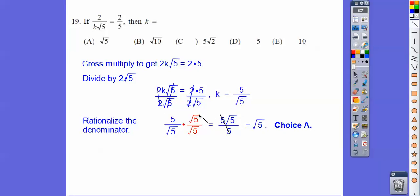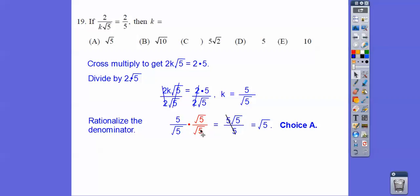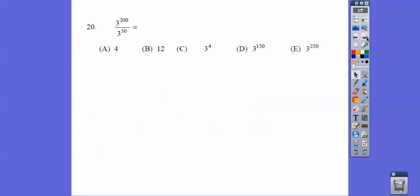So we get rid of the root 5 in the denominator by multiplying by 1, root 5 over root 5 gets us 5 root 5 over plain old 5, and then the 5s cancel. So it's choice A right there.